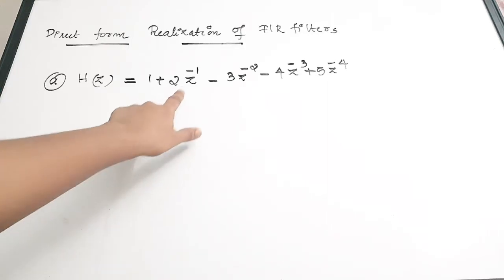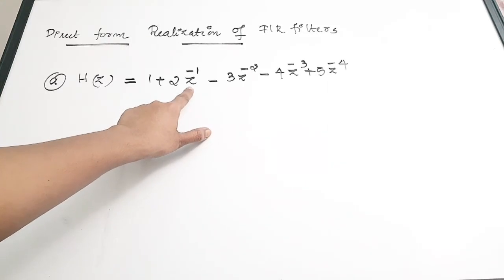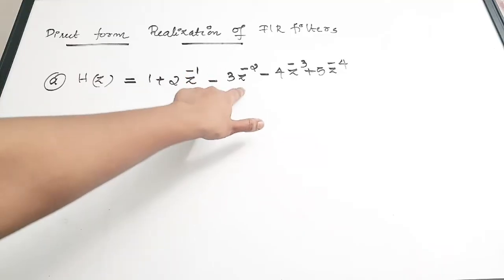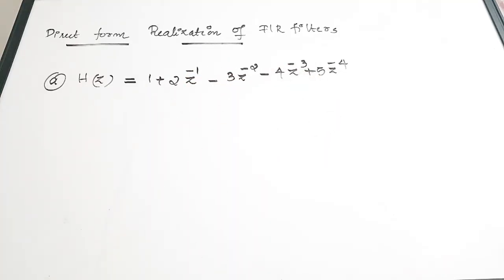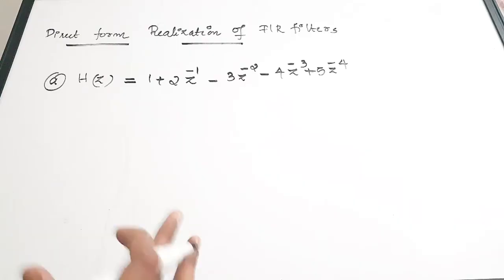You can also see that there are elements Z⁻¹, Z⁻², Z⁻³, and Z⁻⁴. In order to get these elements, we have to pass our input signal X(Z) through multiple delay elements. This is a very small concept — when we are actually doing it, you will get a clear picture.